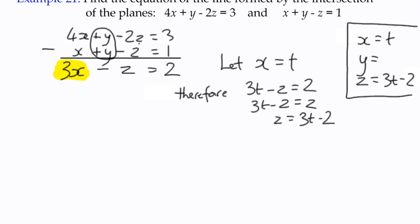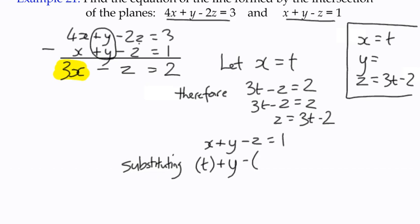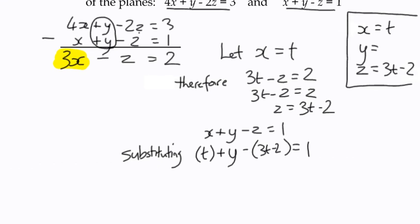So I'm going to take the smaller one, smaller coefficients always works for me. So x plus y minus z equals 1, and we can substitute in. We can say that x is now t plus y minus z is now 3t minus 2 equals 1, and we're using the equation of the plane to determine an expression for y.